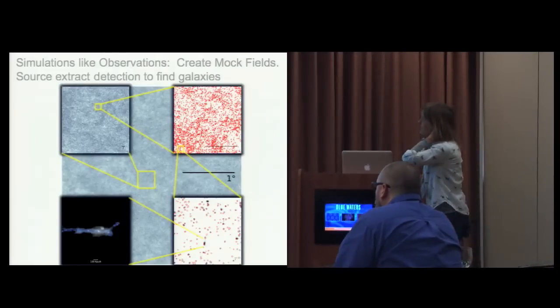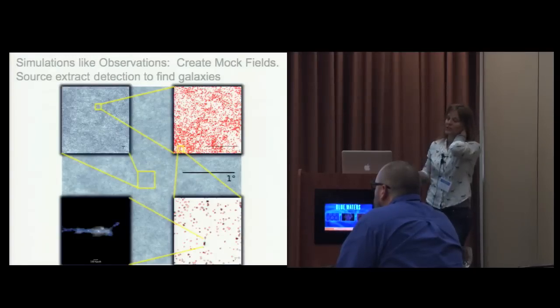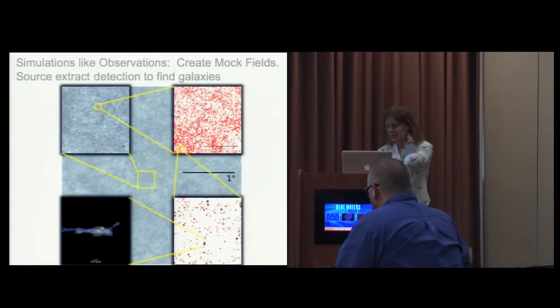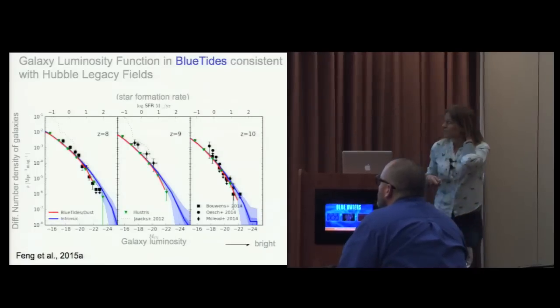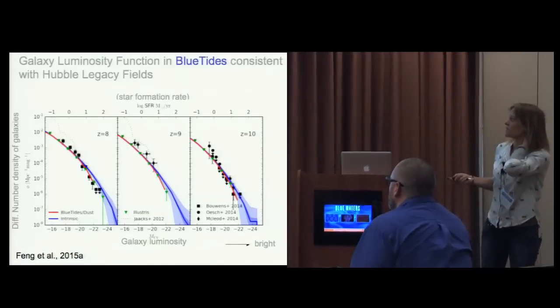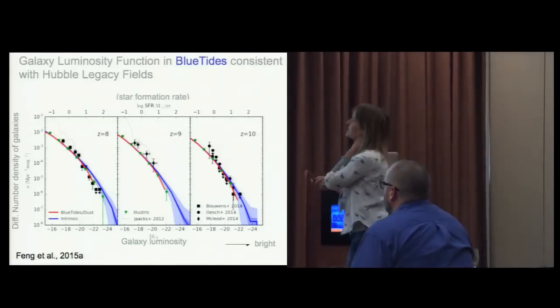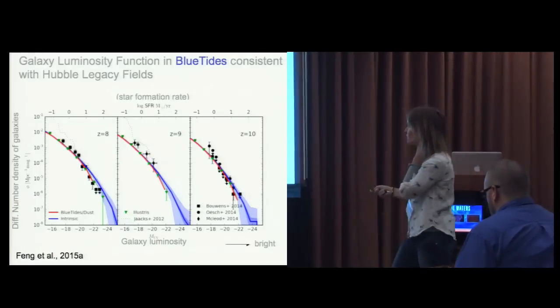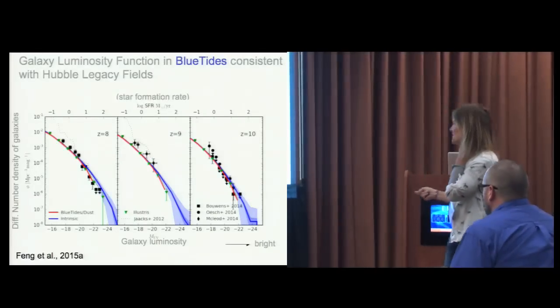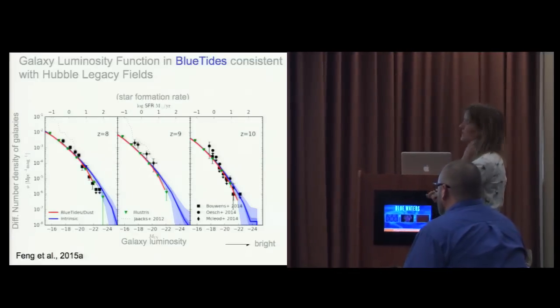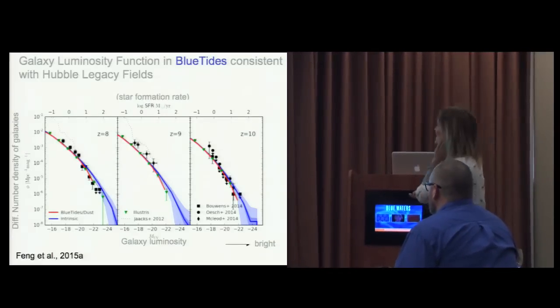We zoom into our volume and find all of the galaxies. This has been done by creating a mock field, and the galaxies were found by source extraction, the same way the observers do. We build luminosity functions - this is the number of galaxies, the differential number of galaxies as a function of luminosity. This is in some astronomy units where the more negative is the brighter the galaxy, in magnitudes.